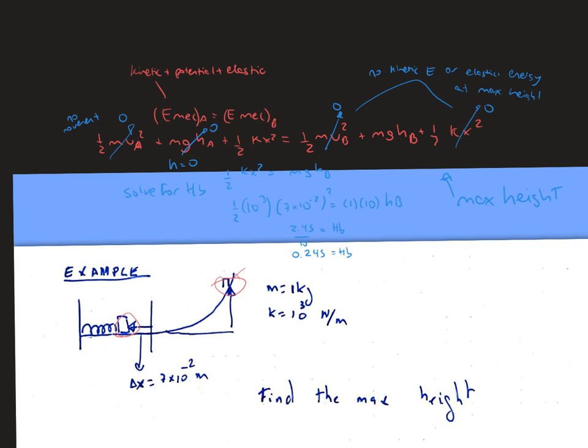The mechanical energy at A equals the mechanical energy at B. So we can rewrite the equation as one-half m v_A² plus m g h_A plus one-half k x², which is going to represent the elastic energy.